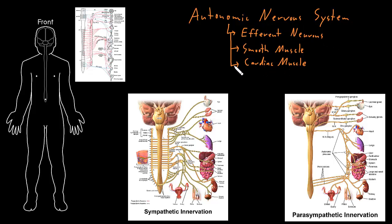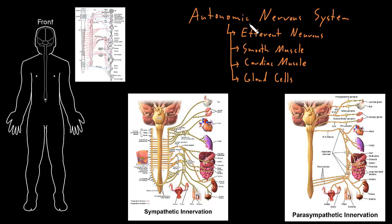The last thing that autonomic neurons control are gland cells — some gland cells are controlled by the autonomic nervous system. The autonomic nervous system is called autonomous because it tends to control all these things without conscious involvement. It kind of does this stuff on its own without our conscious involvement, for the most part.